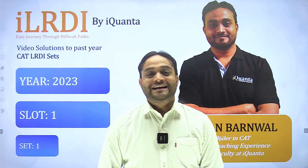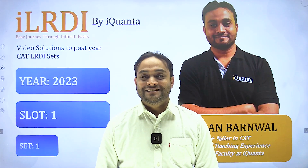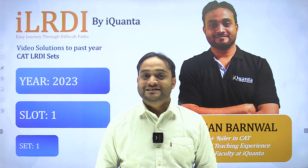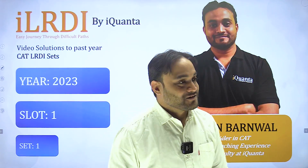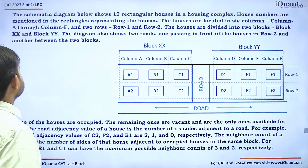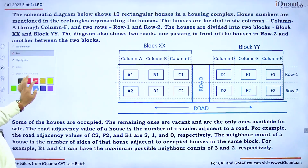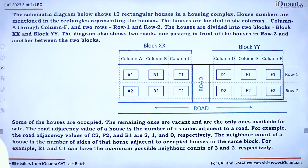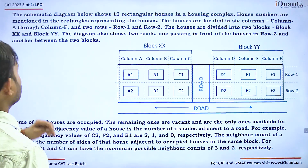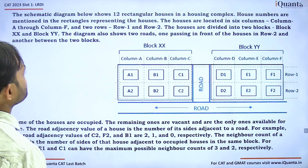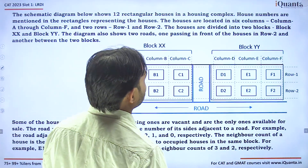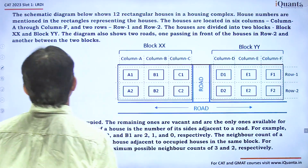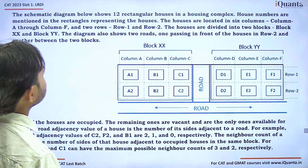Hello everyone. In this DILR series, today I am going to discuss a set from CAT 2022 first slab. This set is regarding Block XX and Block YY. The schematic diagram below shows 12 rectangular houses in a housing complex, with house numbers mentioned in the rectangles representing the houses.